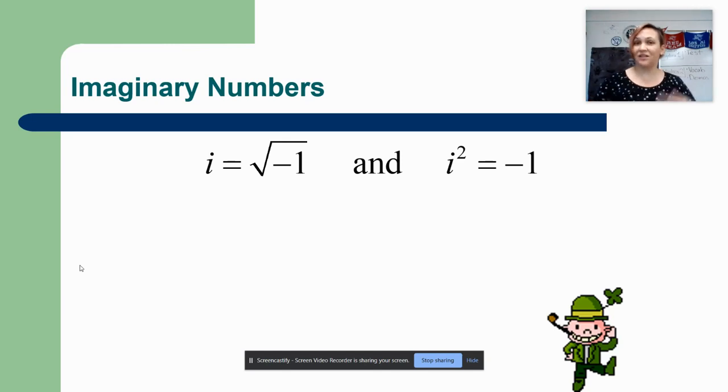And so somebody invented the letter i for imaginary. It's a lowercase, kind of cursive too, you put a little tail at the end of it, a letter i, and that means I'm taking the square root of a negative number.